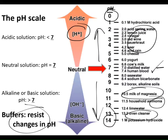Each number on the pH scale represents a tenfold difference in hydrogen concentration — it's a logarithmic scale. So pH 3 is a stronger acid than pH 5. Which is the stronger acid — 3 or 5? Three. Which is the stronger base — 10 or 12? Twelve. The difference from pH 3 to 4 is tenfold; from pH 3 to 5 is a hundredfold difference in hydrogen concentration.